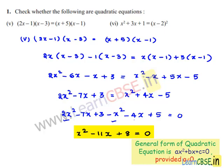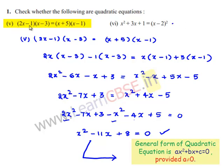We know that the general form of a quadratic equation is ax squared plus bx plus c equals 0. The equation obtained, x squared minus 11x plus 8 equals 0, resembles this general form. So we can conclude that the given equation (2x minus 1)(x minus 3) equals (x plus 5)(x minus 1) is a quadratic equation.